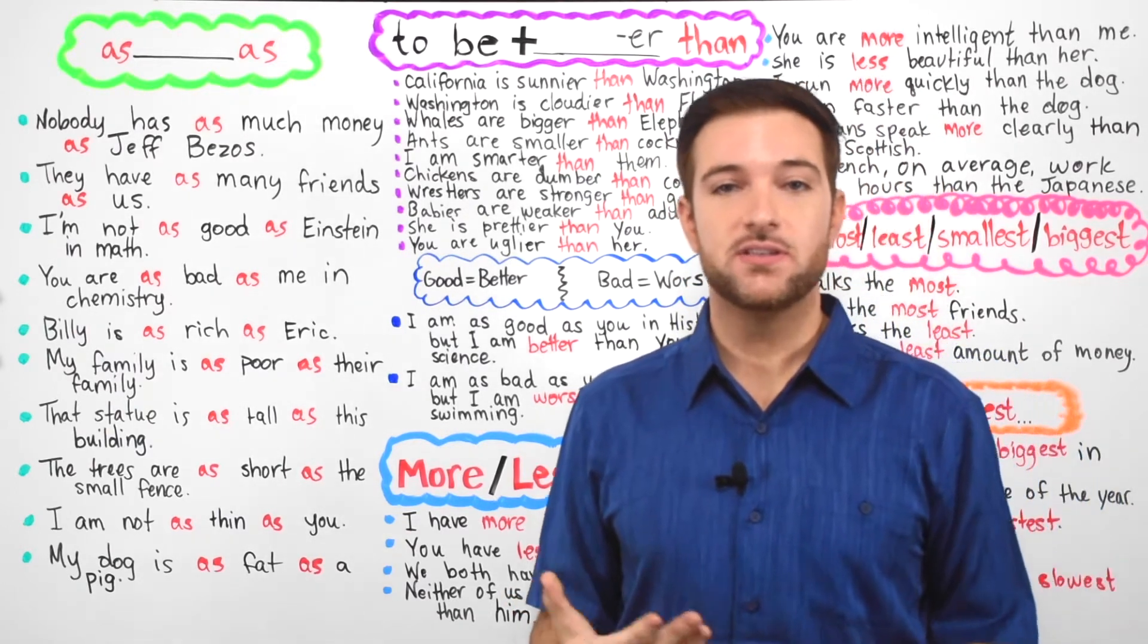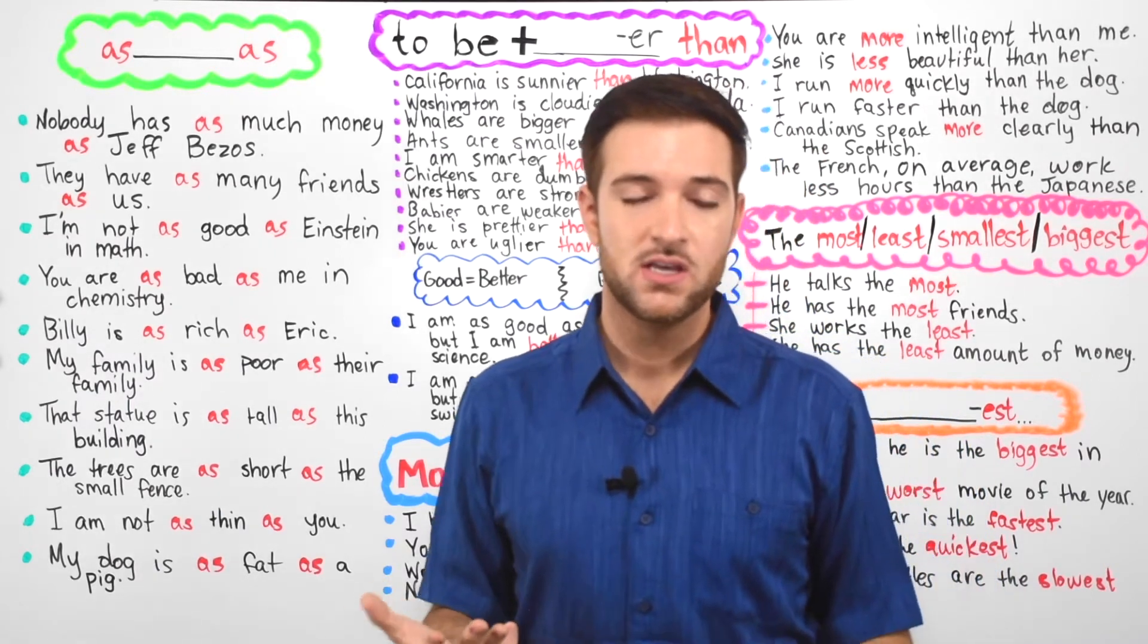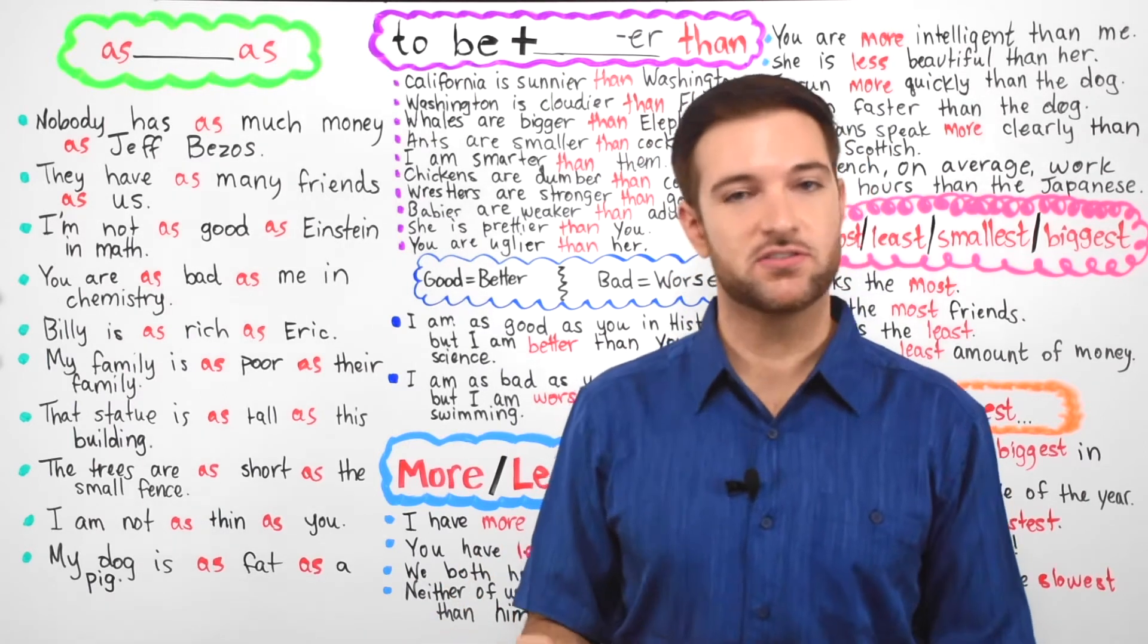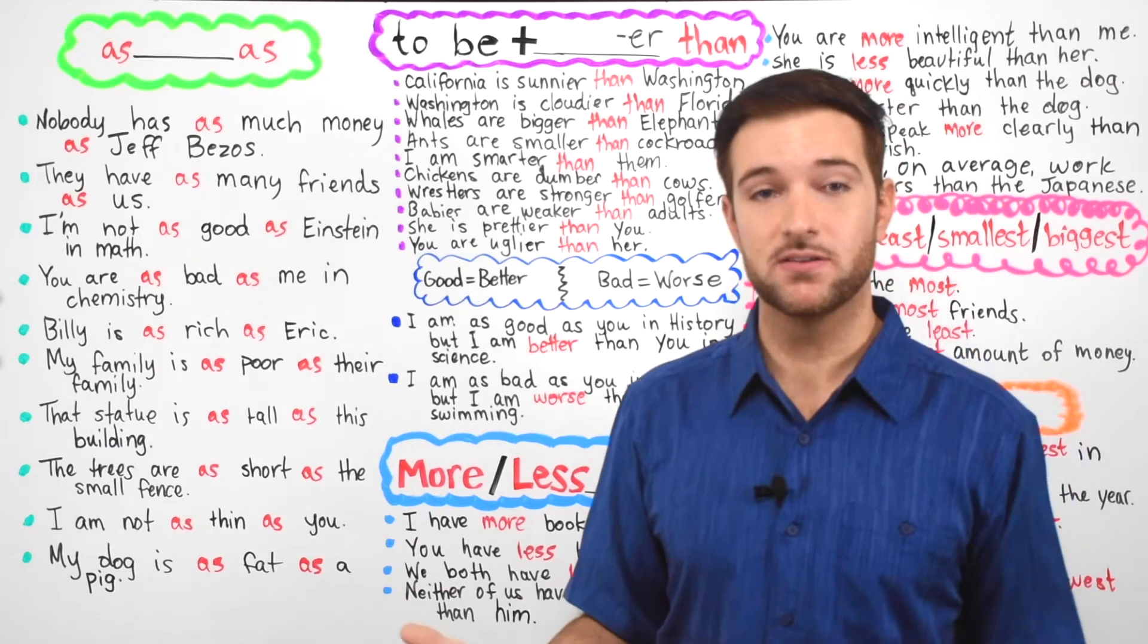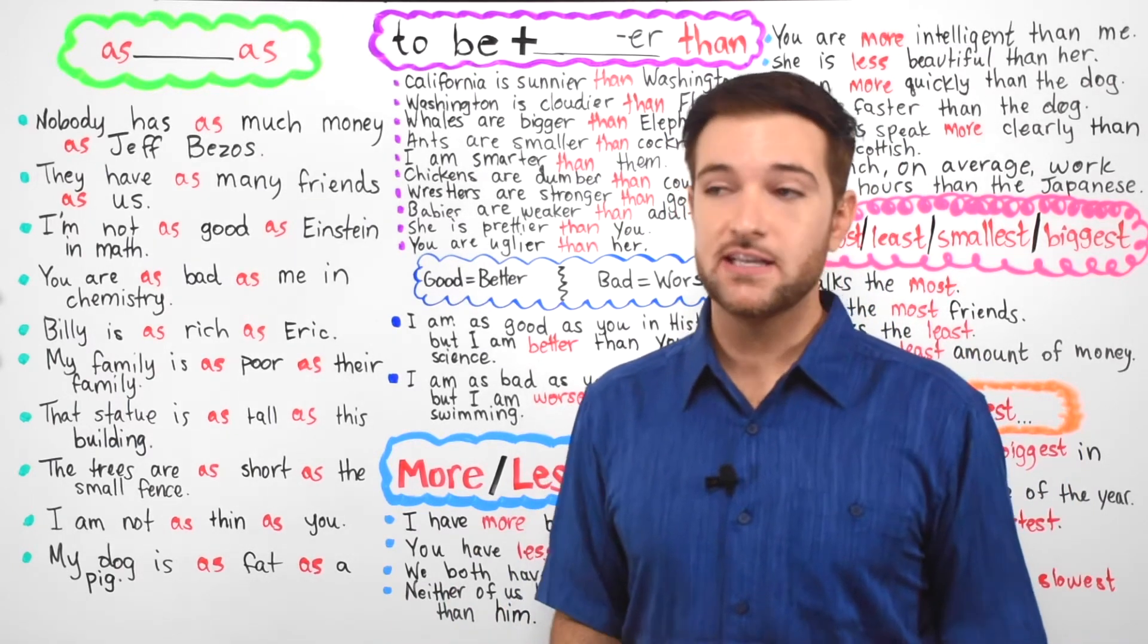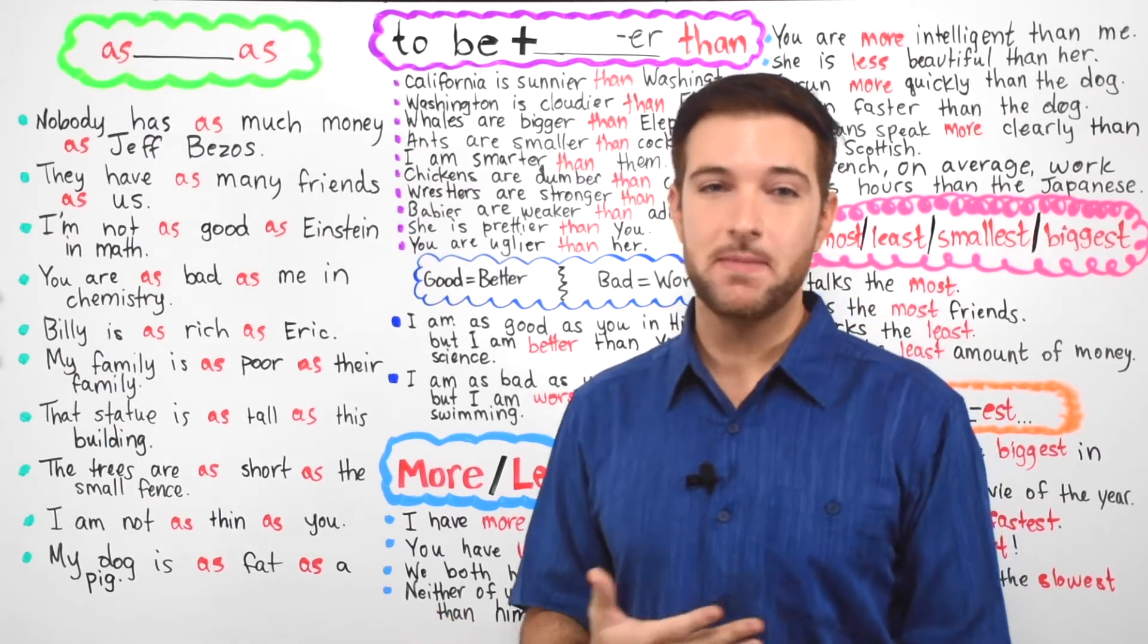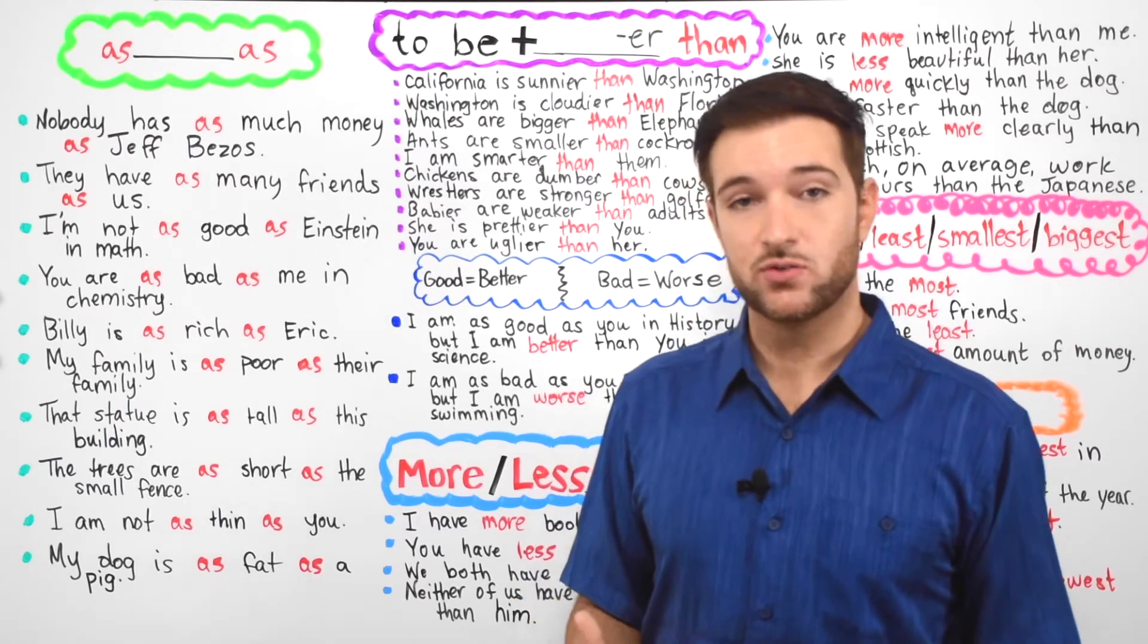One way of describing a noun is to compare it with something else. So we do this all the time. This usually includes words like bigger, smaller, faster, and many other words that you can use to make comparisons. Sometimes in English, English learners, so people who are not native speakers but want to learn English, they make many mistakes when using comparatives and superlatives as well.